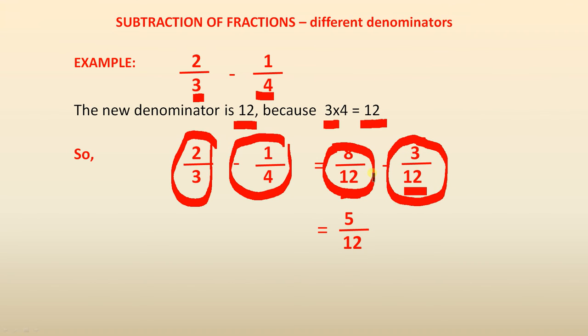So 8 minus 3 gives you 5. You keep the denominators the same, and your new answer is 5 over 12.